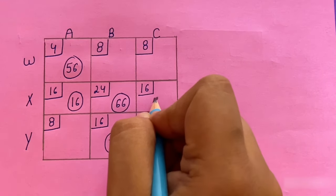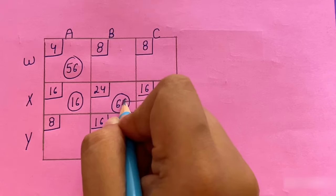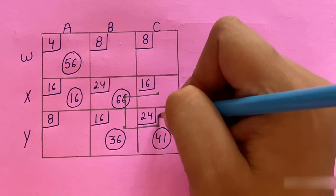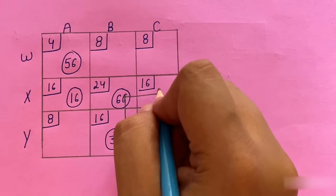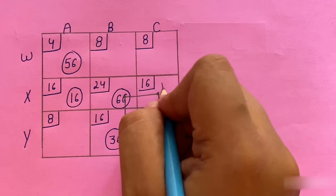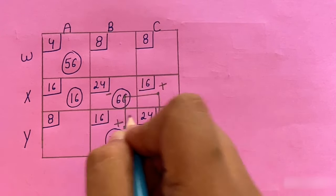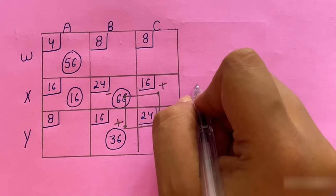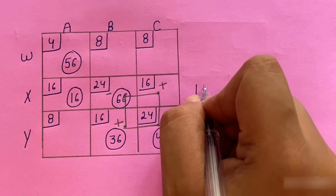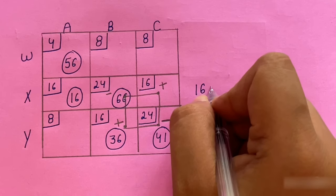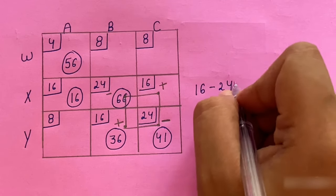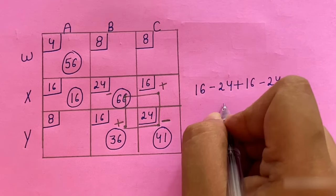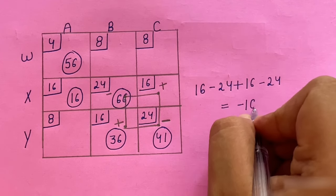For XC, we move through the loop and assign plus and minus signs alternately. The improvement index = 16 − 24 + 16 − 24 = −16.